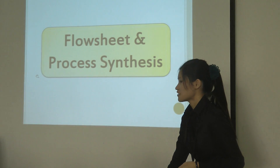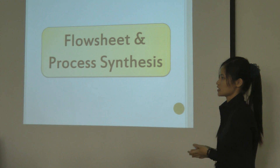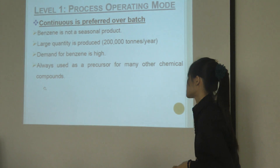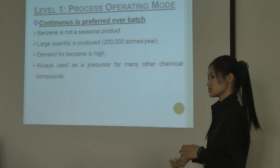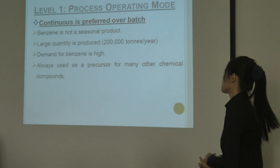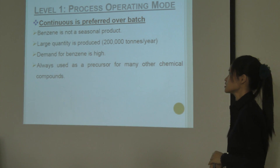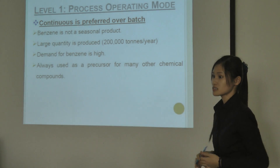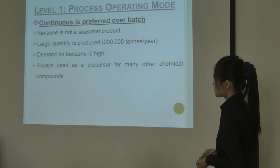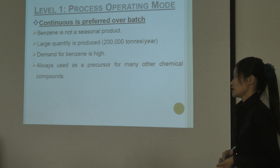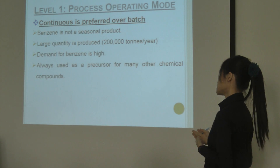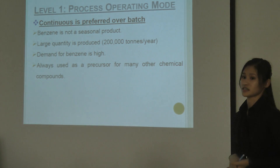There are five levels stated in the Douglas method. Level one is the process mode of operation. In benzene production, a continuous process is preferred over batch mode because benzene is not a seasonal product and a large quantity is always produced — about 200 kilotons per year. The demand for benzene is also high because it is used as a precursor for many other chemical compounds.